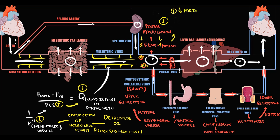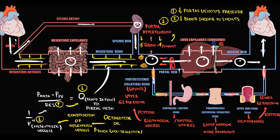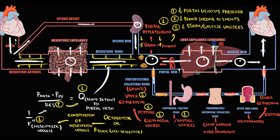Both drugs cause decreasing portal venous pressure. The lower the volume inside the portal vein, the lesser the volume of blood entering the portosystemic collateral vessels. The lower the volume of blood in the shunts, the lesser the amount of blood entering the esophageal and gastric varices. With decreasing volume of blood inside the varices, their size decreases, and the risk of rupture is significantly lower — preventing upper GI bleeding. Additionally, with decreasing volume in the shunts, the severity of caput medusae decreases, and the severity of hemorrhoids decreases.